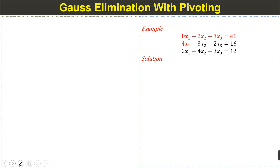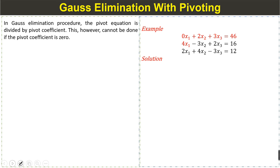Gauss elimination method with pivoting: In the Gauss elimination procedure, the pivot equation is divided by the pivot coefficient. However, this cannot be done if the pivot coefficient is 0.